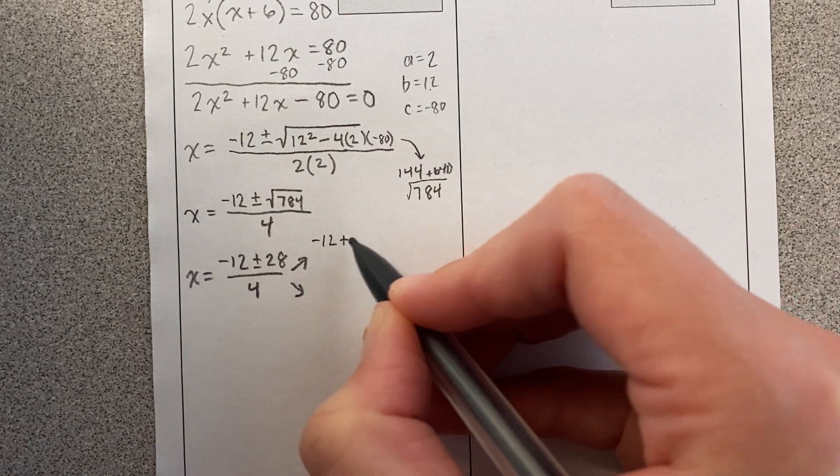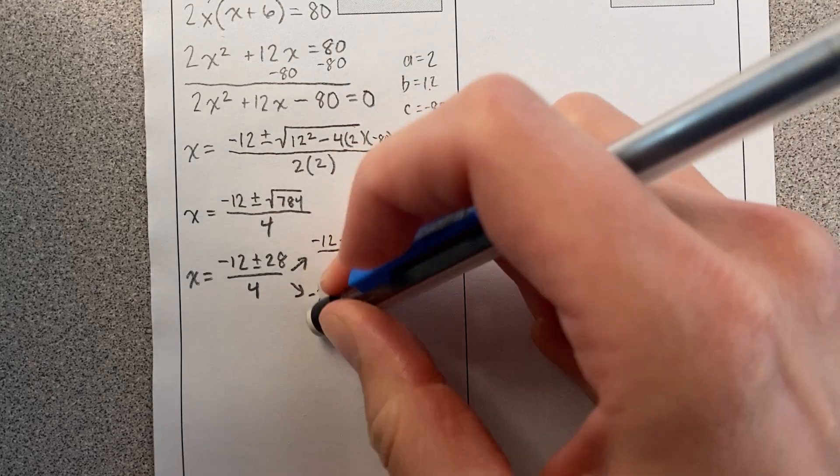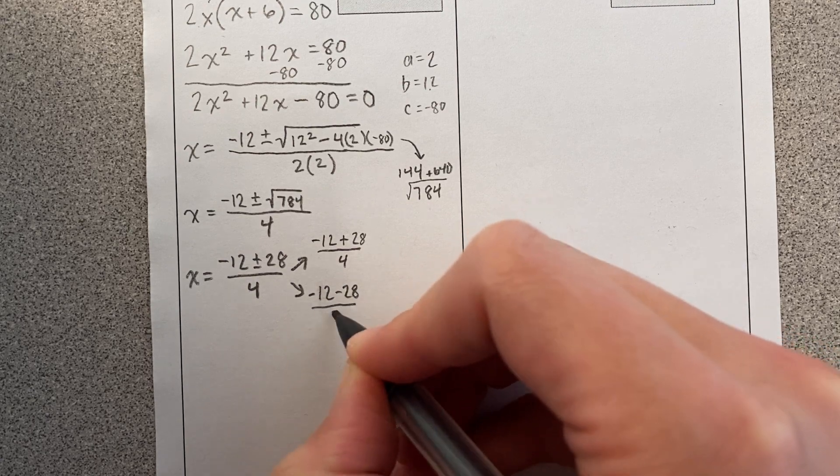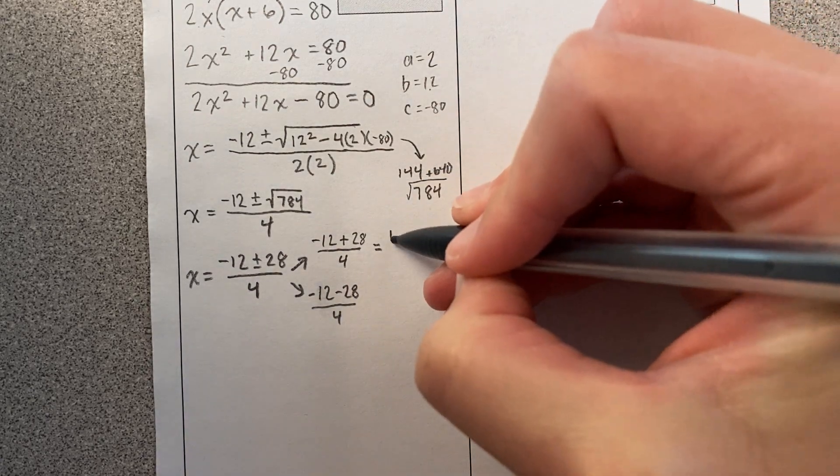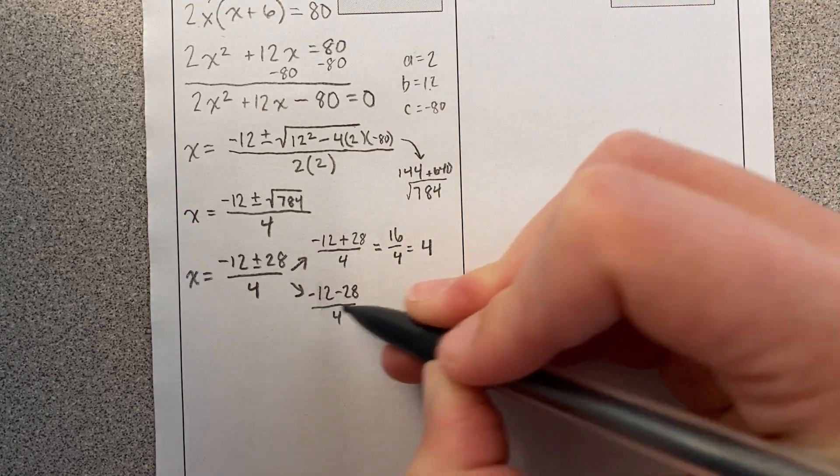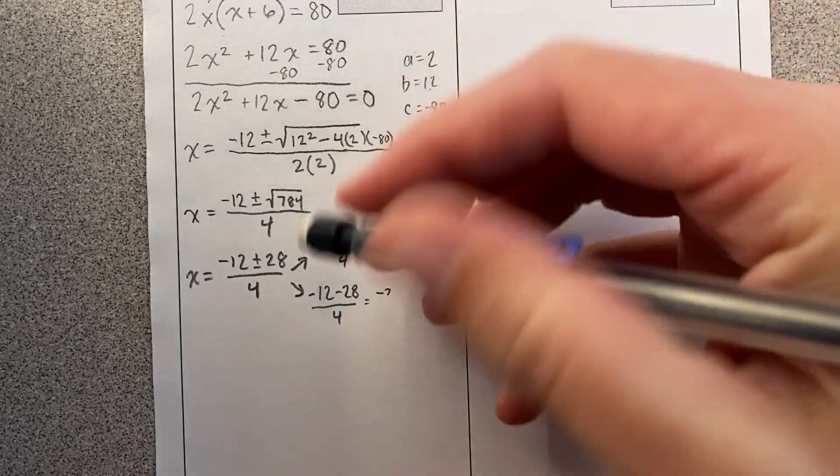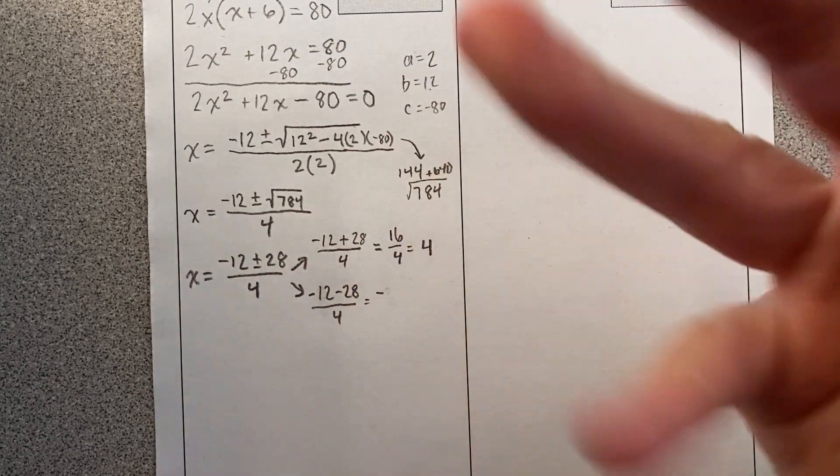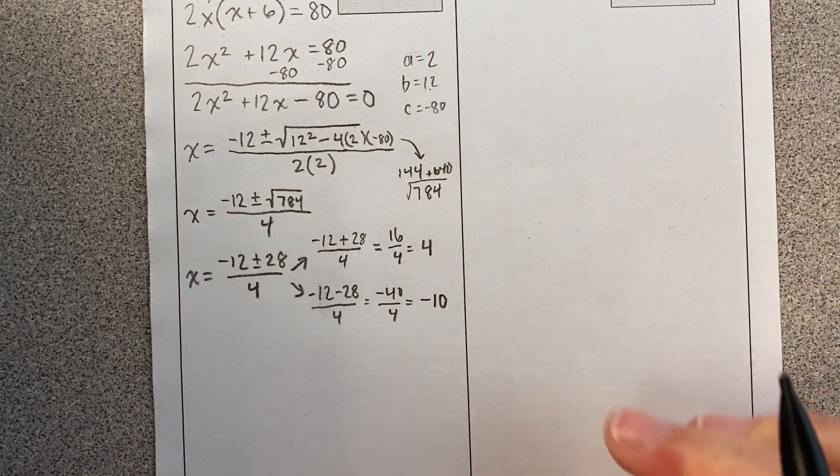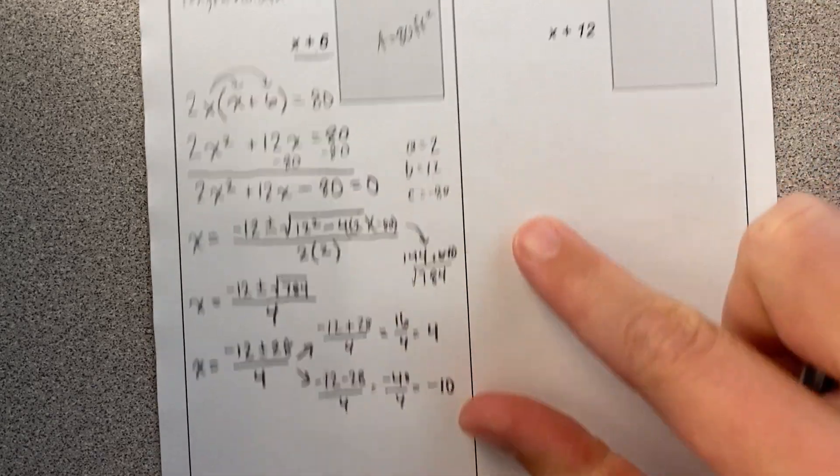Okay, so here are my two answers. Negative 12 plus 28 over 4, and negative 12 minus 28 over 4. Here we go. Negative 12 plus 28 is 16 divided by 4 is 4. And negative 12 minus 28 is negative 40 over 4, and that equals negative 10. Okay, so I get two solutions. Now, hey, these are my x values. Okay, x could equal 4 or negative 10.